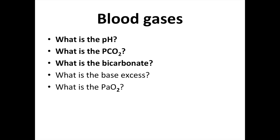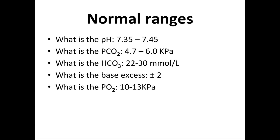When you are presented with a blood gas, you want to know: what is the pH, what is the carbon dioxide, what is the bicarbonate, what is the base excess, and what is the oxygen. The normal ranges are: pH 7.35 to 7.45, carbon dioxide 4.2 to 6 kilopascals, bicarbonate 22 to 30 millimoles per litre, base excess minus 2 to plus 2, and oxygen 10 to 13 kilopascals.